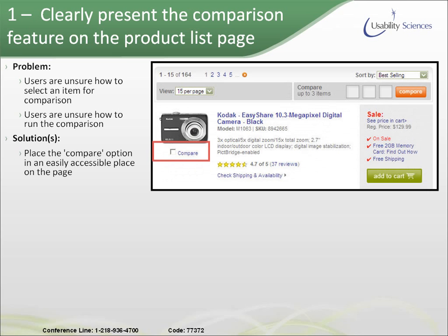This is an example from Best Buy. They do a really good job of placing the compare feature right below the picture of the item that your user is looking at to purchase. Another good idea is to use a button for the actual compare function. You notice that they have a checkbox here, so you can check it to denote that this is one you want to compare. But in order to run the compare, they change it to a button. Buttons are always actionable items, so it's very easy to see that this is something you need to click in order to get a resulting action.